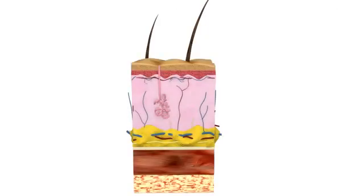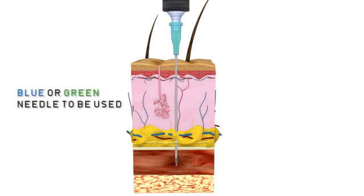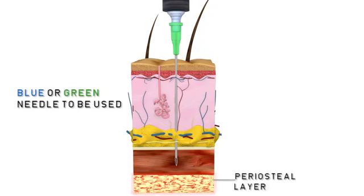The intramuscular route is used when a rapid systematic action is required. The nurse must consider whether a blue or a green needle should be used to access the muscle of the patient without hitting the periostal layer of the bone.